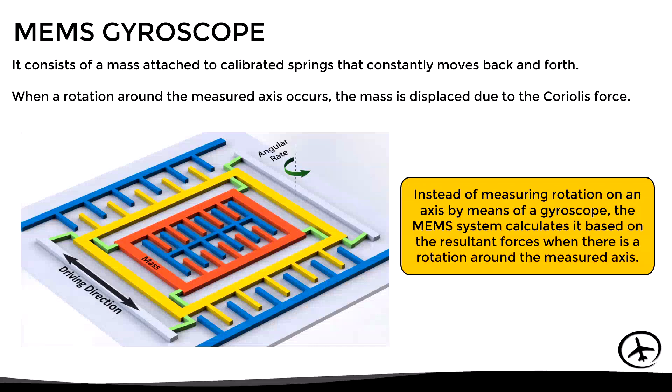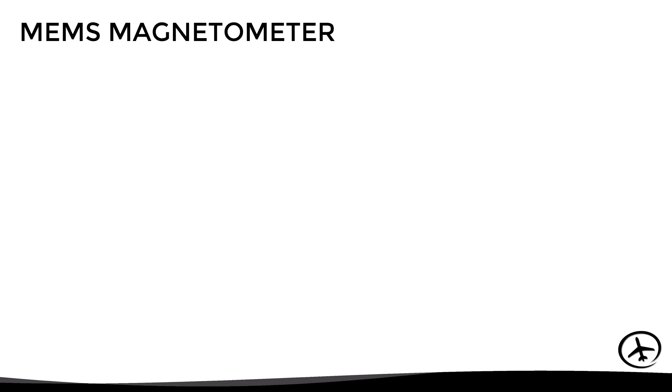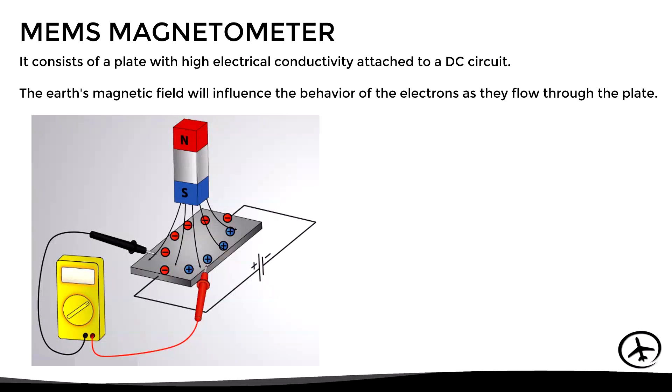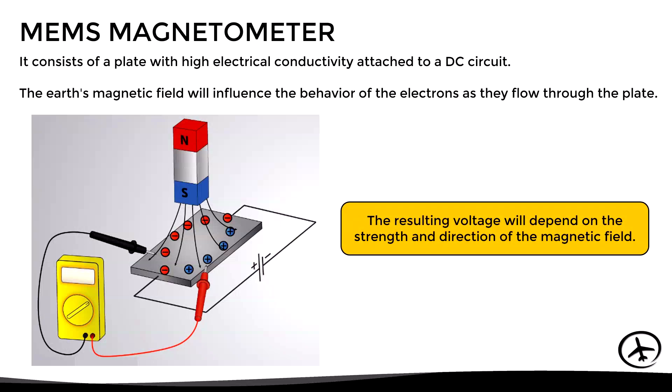A MEMS magnetometer consists of a plate with high electrical conductivity attached to a direct current circuit. The Earth's magnetic field will influence the behavior of electrons as they flow through the plate. By measuring the voltage between two points in the plate, the resulting value will depend on the strength and direction of the magnetic field, thus allowing it to be measured in three axes.